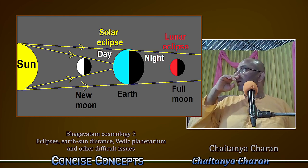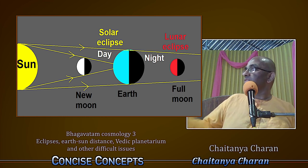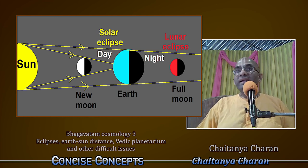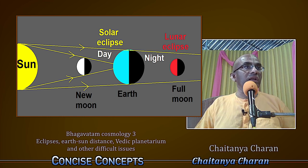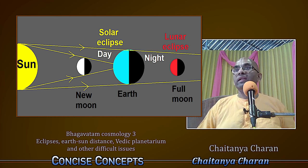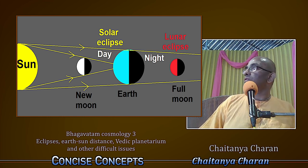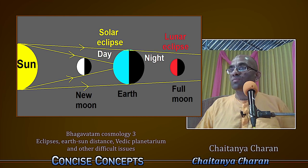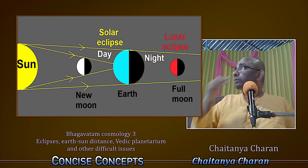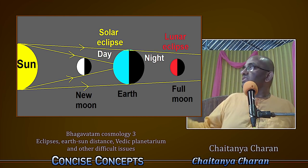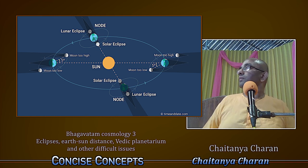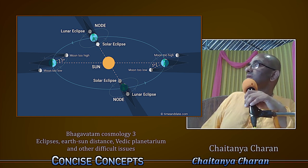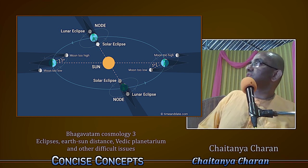That is how eclipses happen — that's the modern understanding, and at least from a functional perspective it's accurate. We are able to predict eclipses with a substantial level of accuracy using this model. So now what is the Vedic understanding? This becomes a little more subtle and sophisticated.